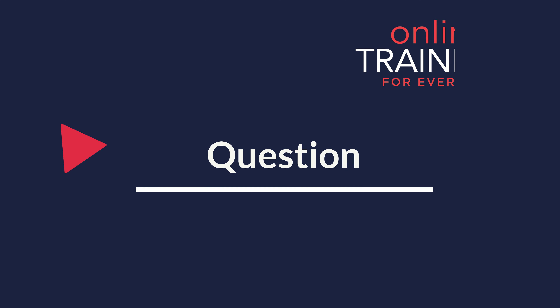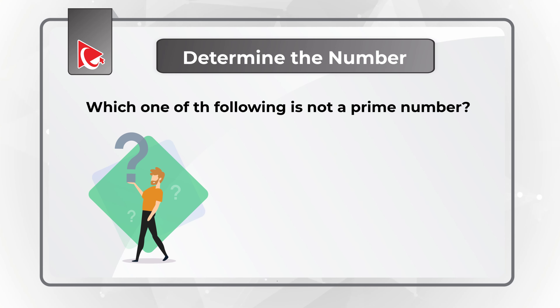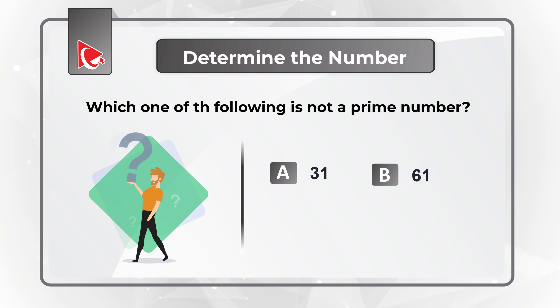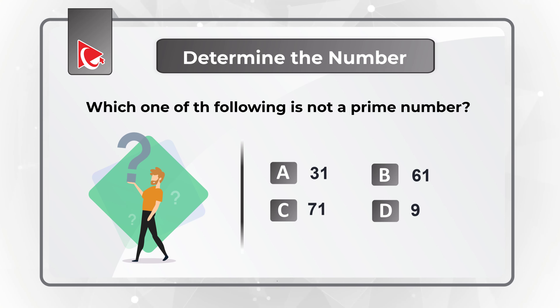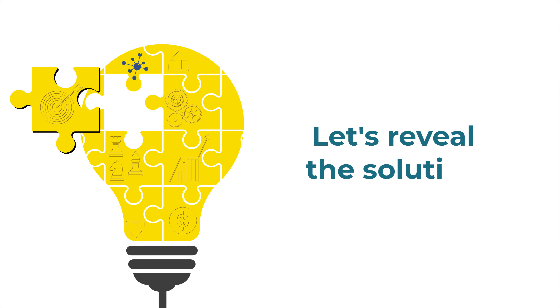Here is an interesting question where you're presented with a set of numbers and need to determine which number is not a prime number. You have four choices: Choice A, 31; Choice B, 61; Choice C, 71; and Choice D, 91. Give yourself a little bit of time — maybe recall the definition of prime numbers — and see if you can come up with the solution.